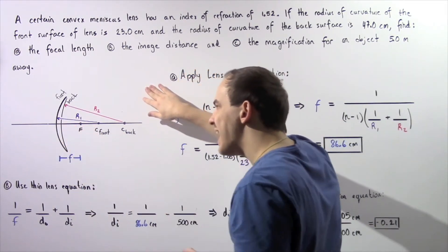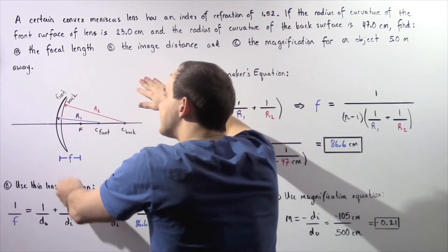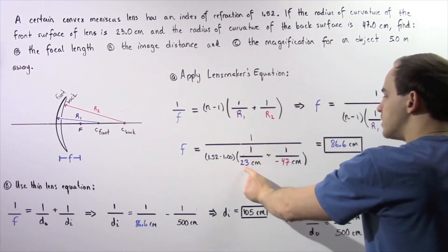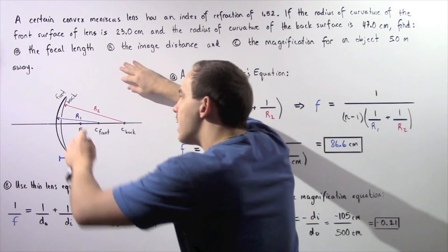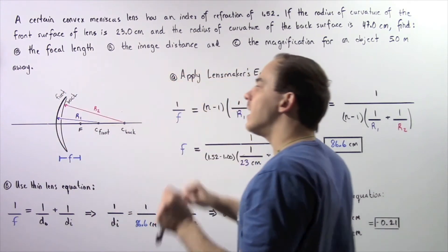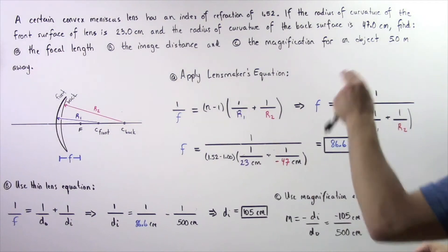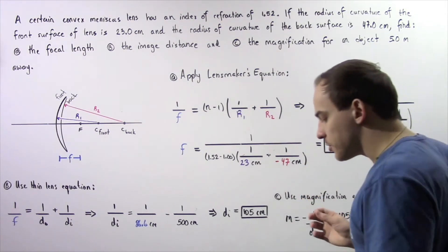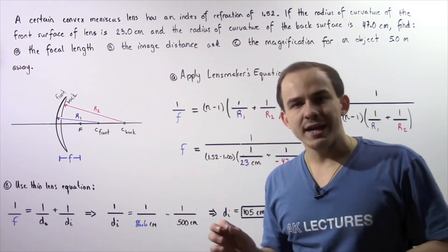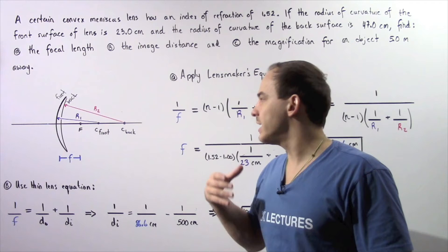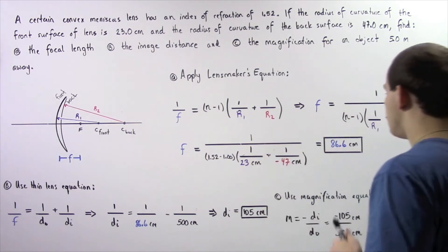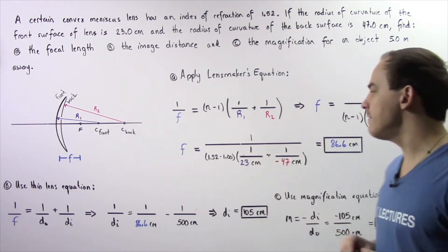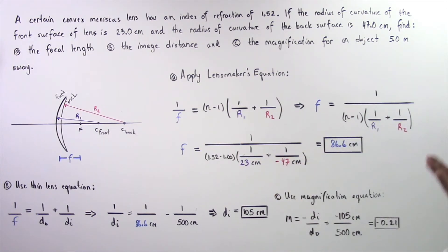R1 is positive because the front surface is convex, so we have 1 divided by 23 centimeters. R2 is negative because the back surface is concave, or a diverging surface. Remember: for a convex surface the radius of curvature is always positive; for a concave surface it is always negative. So 1 divided by negative 47 centimeters. Plugging these values into our calculator, the focal length is approximately 86.6 centimeters.